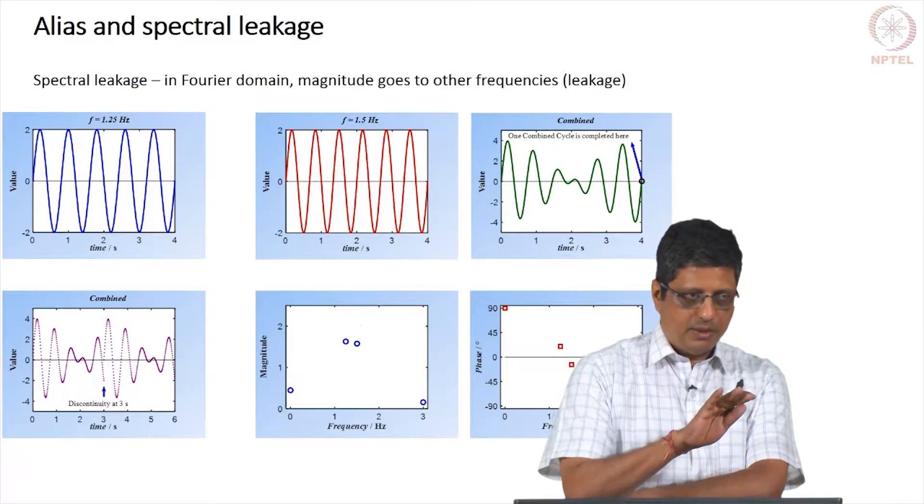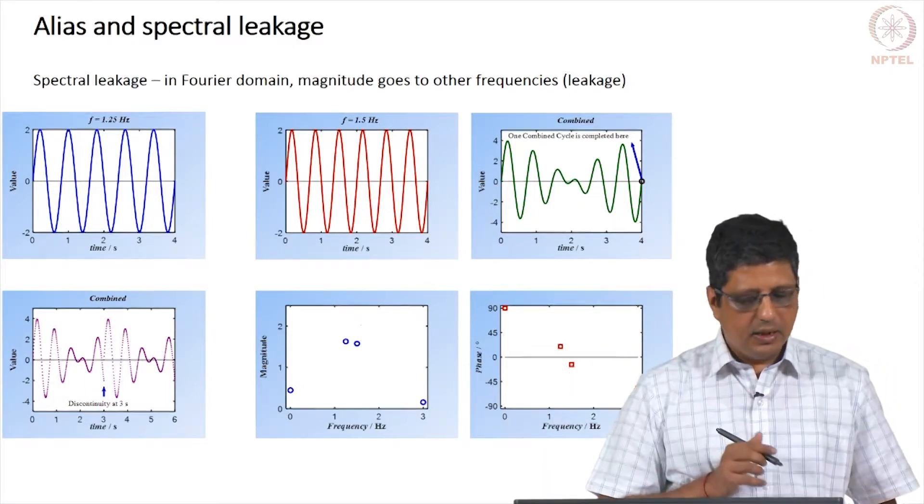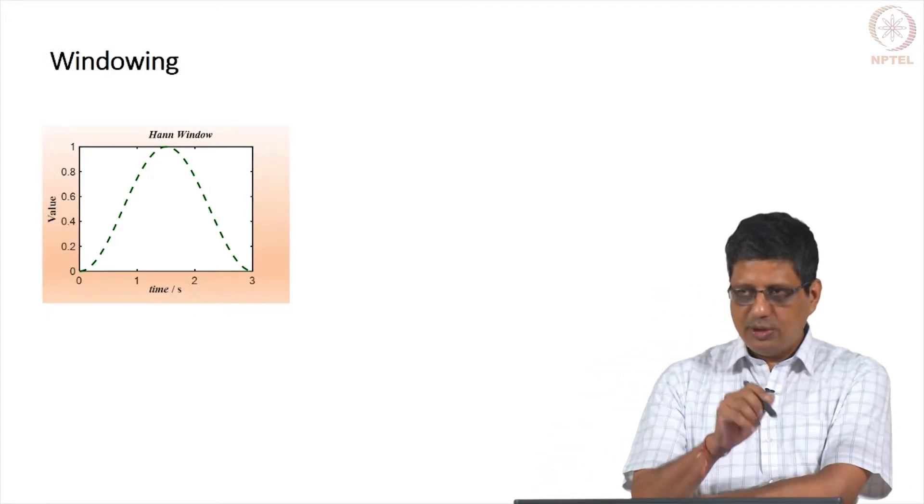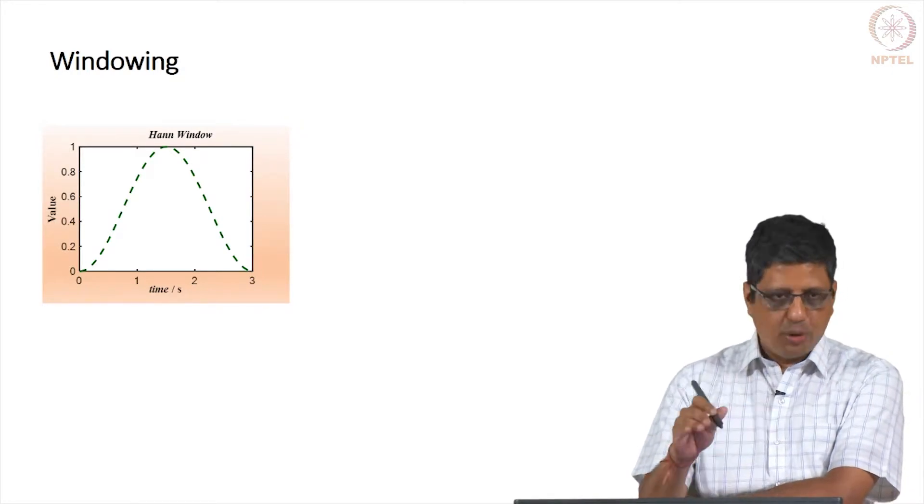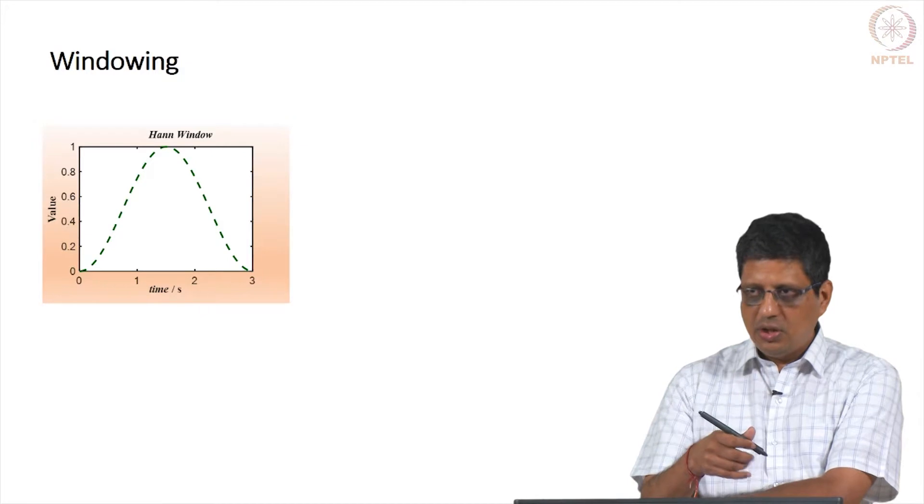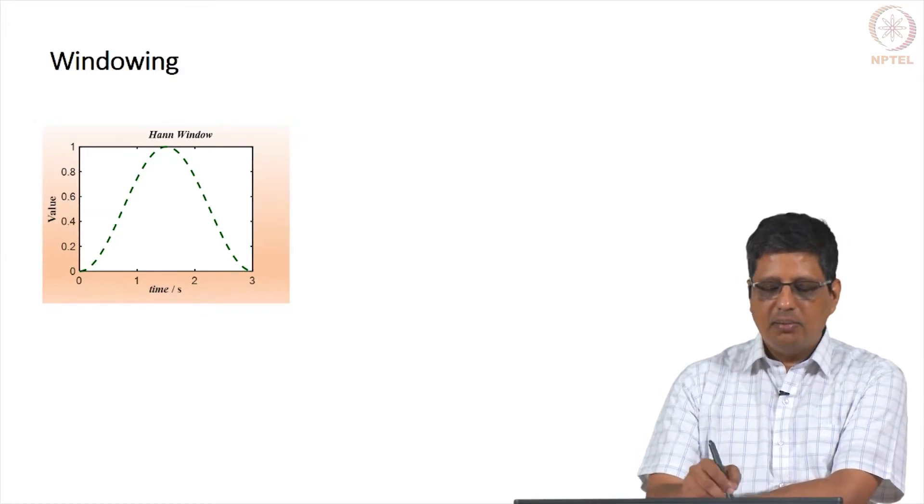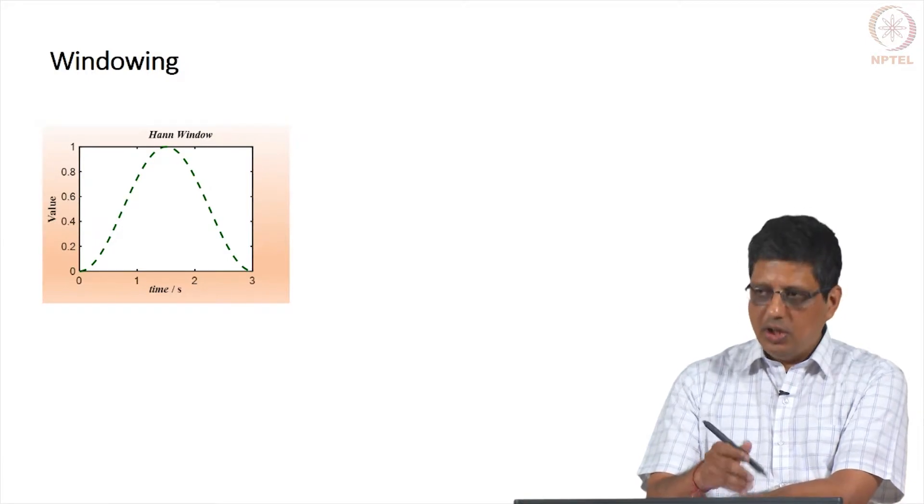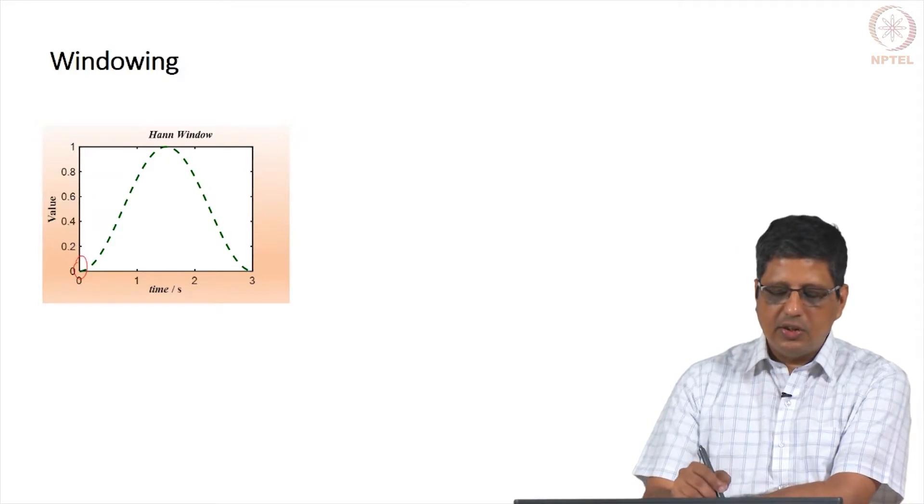When you have spectral leakage, it is possible to overcome it to some level using a technique called windowing. Here we take data from 0 to 3 seconds. So whatever data we get, its potential here, you can also get the current. You can multiply that by a particular function here called hann function. Similarly, you can multiply by other function. Notice the function starts at 0 and ends at 0.